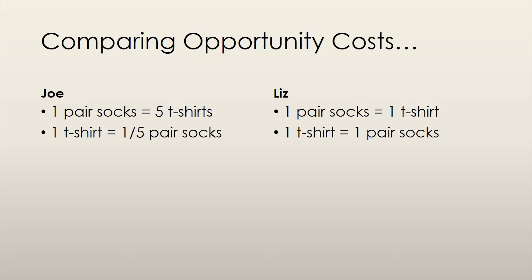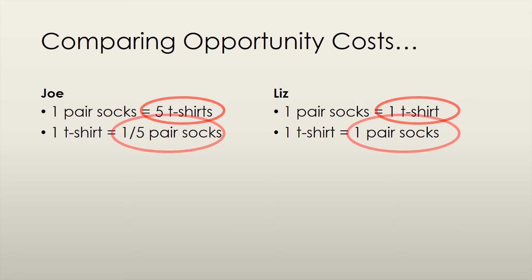We've established that both Liz and Joe have different opportunity costs of producing socks and t-shirts. Looking at socks alone, Joe has to sacrifice making 5 t-shirts for every pair of socks he makes, while Liz only has to give up 1 t-shirt for every pair of socks. Since her opportunity cost of producing socks is lower, Liz has the comparative advantage in producing socks. On the other hand, it costs Joe one-fifth of a pair of socks to produce 1 t-shirt, while it costs Liz a full pair of socks. Thus, Joe has the comparative advantage in producing t-shirts.